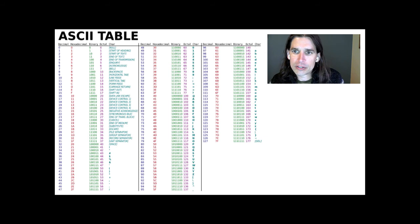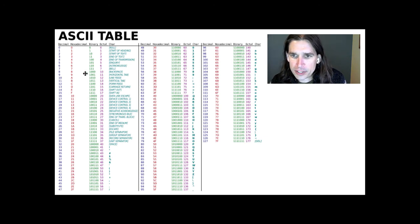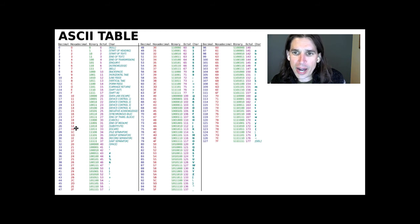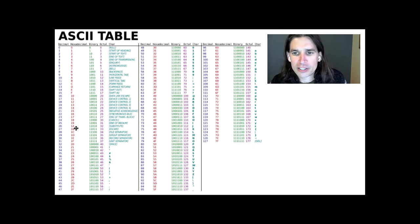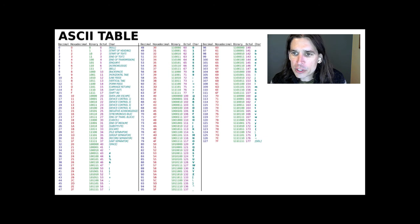The ASCII table shows several numerical representations for each character: decimal, hexadecimal (base 16), binary, and octal (base 8). Octal is a base 8 system using characters 0 through 7. In hexadecimal, 0 through 9 are used as in decimal, but the character A represents 10, B represents 11, C represents 12, up to F which represents 15. You will sometimes see hexadecimal numbers as you work with computer systems. The ASCII table describes an encoding scheme for messages.